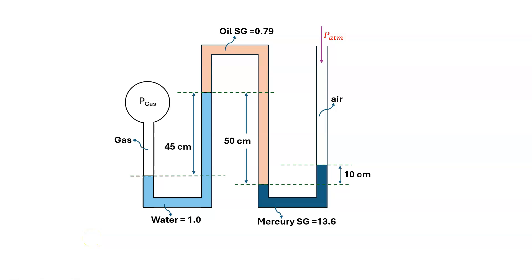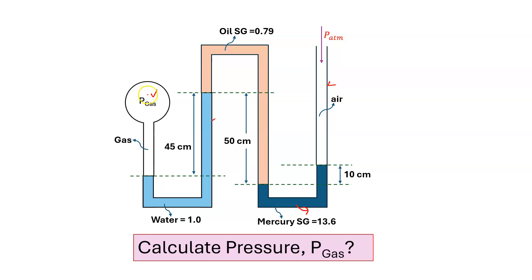Today I'll solve one numerical problem on a double pipe multi-fluid U-tube manometer. The manometer is connected with a pipeline in which gas is flowing. Due to the gas pressure P, water and another manometric liquid are pushed down and rise in the next column. Above the water, oil is present. Mercury is the manometric liquid in the lower section, with air above it, and the right-hand side column is open to atmosphere.